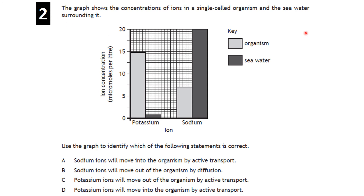Question: a graph shows ion concentrations in a single-celled organism and surrounding sea water — identify which statement is correct. The answer is D: potassium ions are at a high level inside the organism but low concentration in the sea water, so potassium ions move into the organism by active transport, moving from low to high concentration.